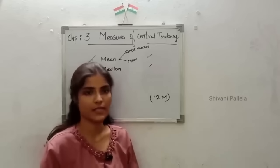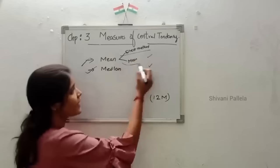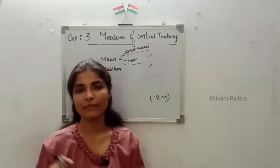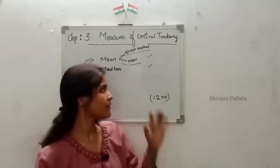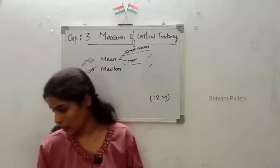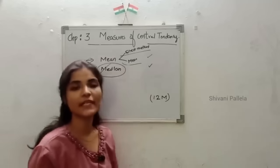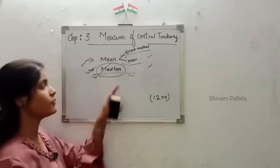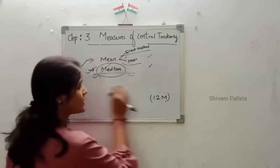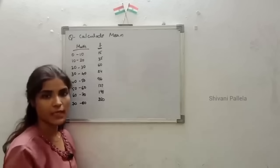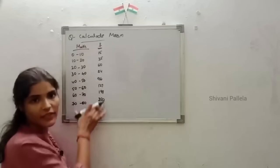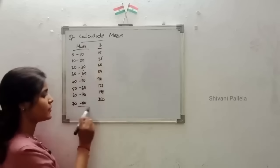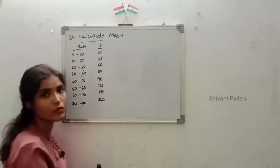In mean you are having two methods: direct method and simple method. They will give the data and ask you to find the mean, or calculate arithmetic mean using assumed mean. In previous year question papers they have asked to calculate mean and given data like this: marks 0 to 10, 10 to 20, 20 to 30, 30 to 40, up to 70 to 80, with frequency also given.